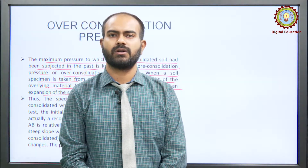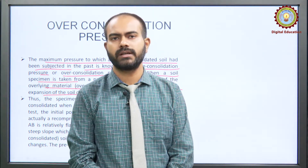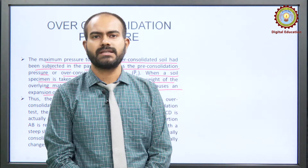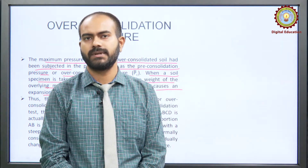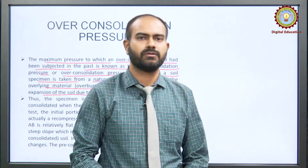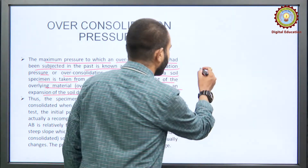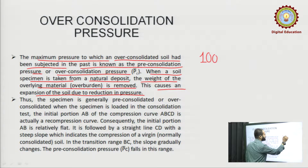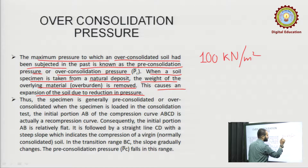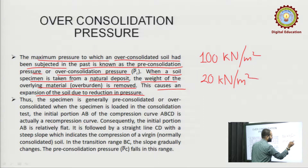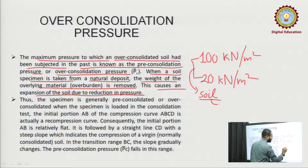What is over-consolidated soil? Over-consolidated soils are those soils which have already experienced a higher pressure than what they are experiencing today. For example, in the past it might have experienced a pressure of 100 kilo Newton per meter square, but today if we measure the pressure, we find it is only 20 kilo Newton per meter square. So this soil will be said to be over-consolidated.